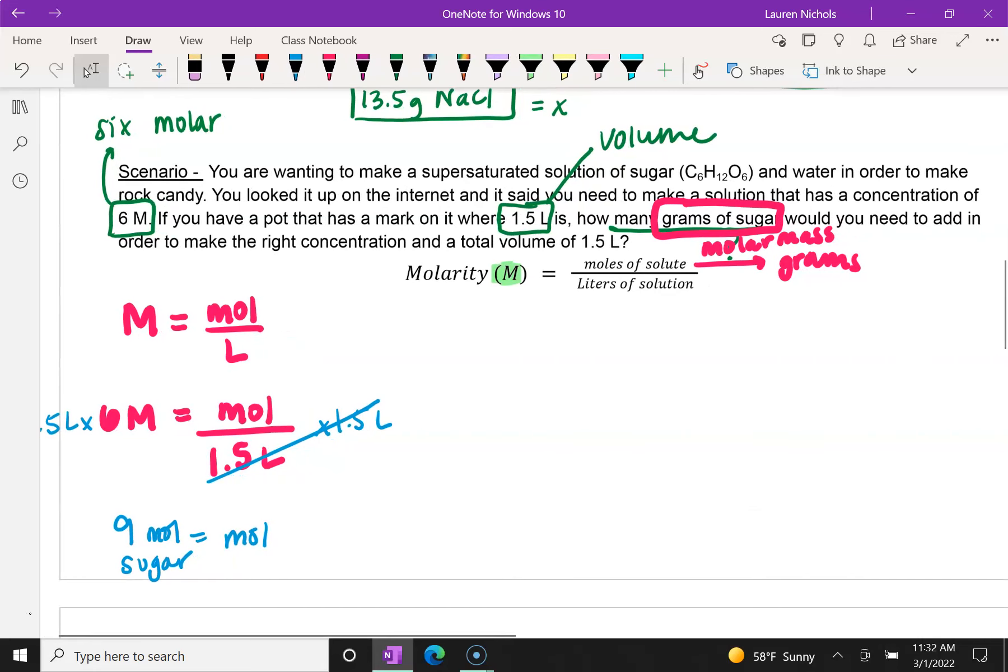Now, sugar has a chemical formula of C6H12O6. So if I know that I need 9 moles of C6H12O6, I can determine how many grams I need by using the molar mass. So this will be just a one-step t-chart. Very simple.